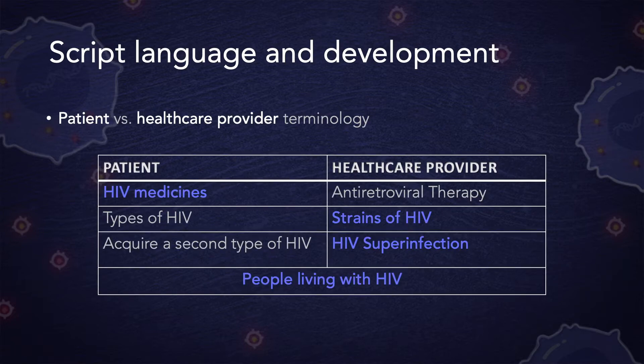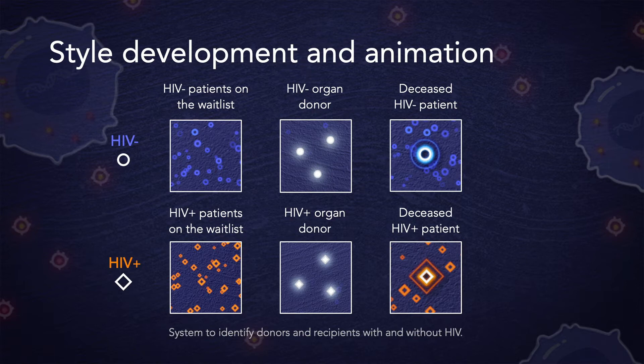A script was developed with language comfortable for both audiences — both patients and those in healthcare. The script was mostly written at the patient level; however, certain higher-level medical terms were used, such as HIV superinfection. Additionally, someone with an HIV infection should be referred to with person-first language, as a person living with HIV. Using terminology specific to patients with HIV will help to prepare those in the organ donation system to communicate with these patients. When discussing organ transplantation in the community of people living with HIV, we explored representational and metaphorical storytelling. The following system of icons was developed to visually differentiate donors and recipients both with and without HIV.